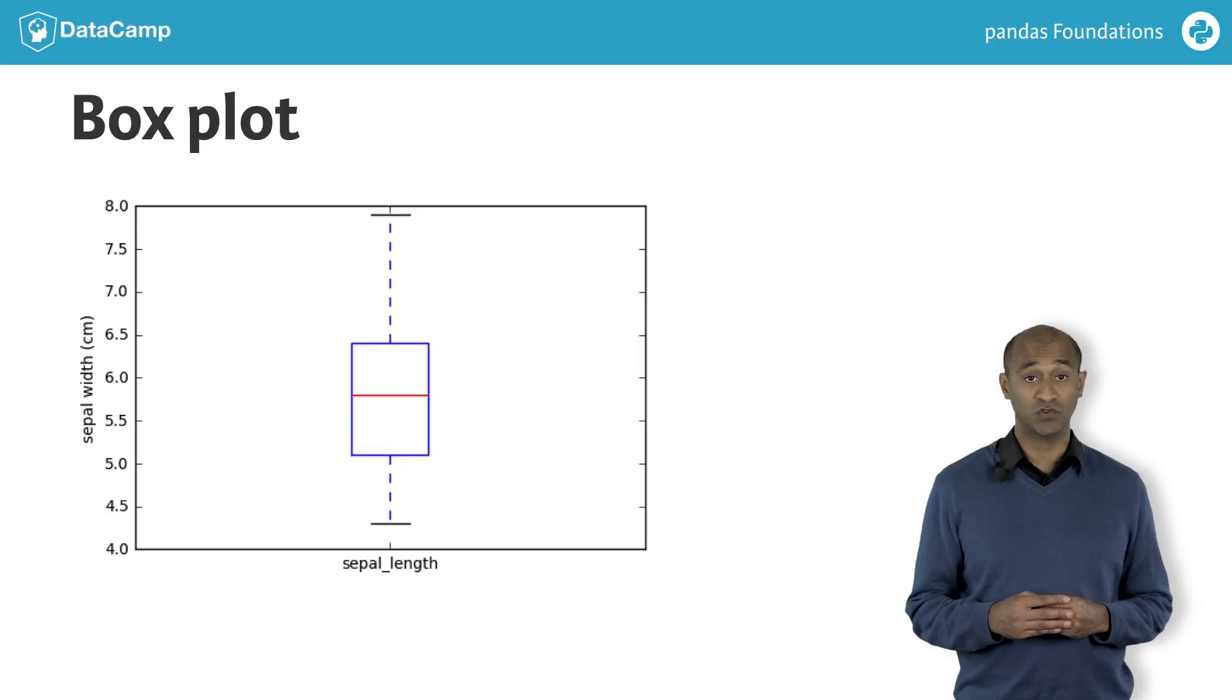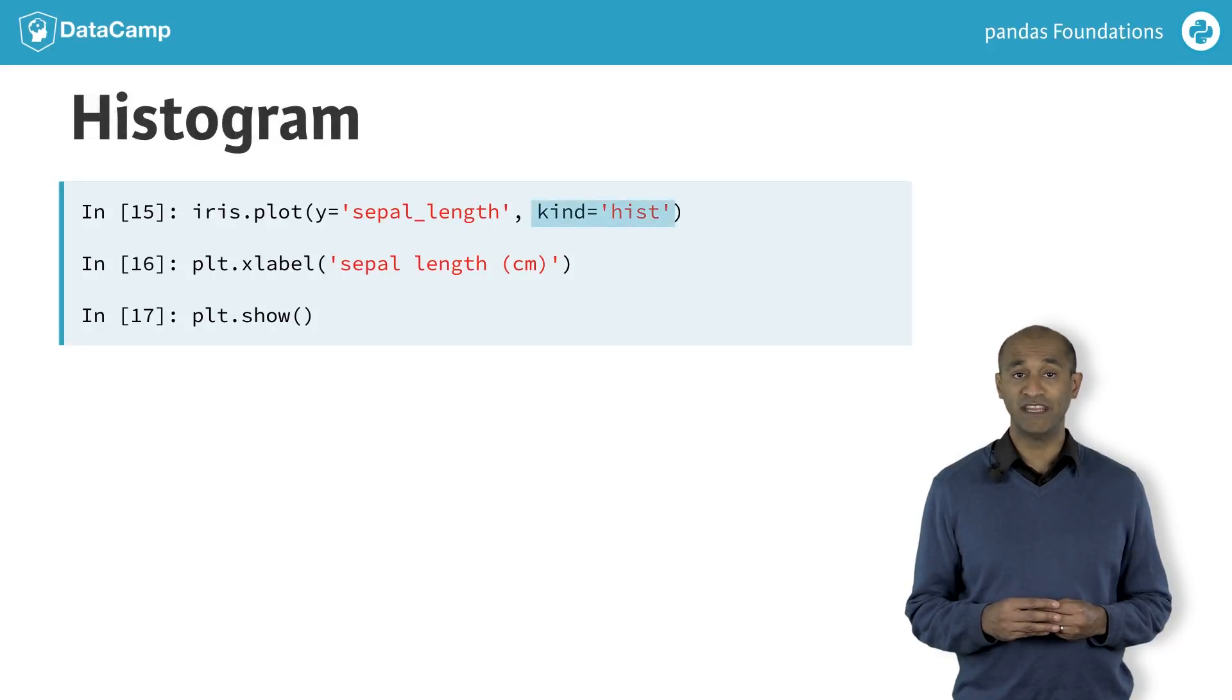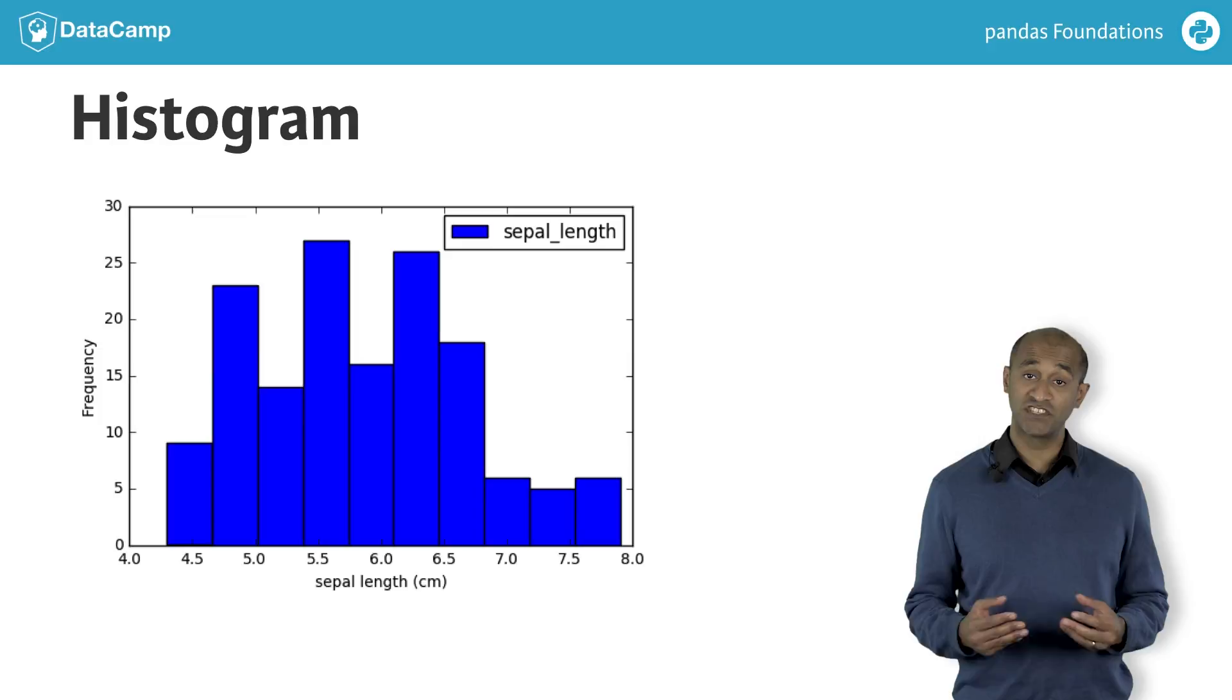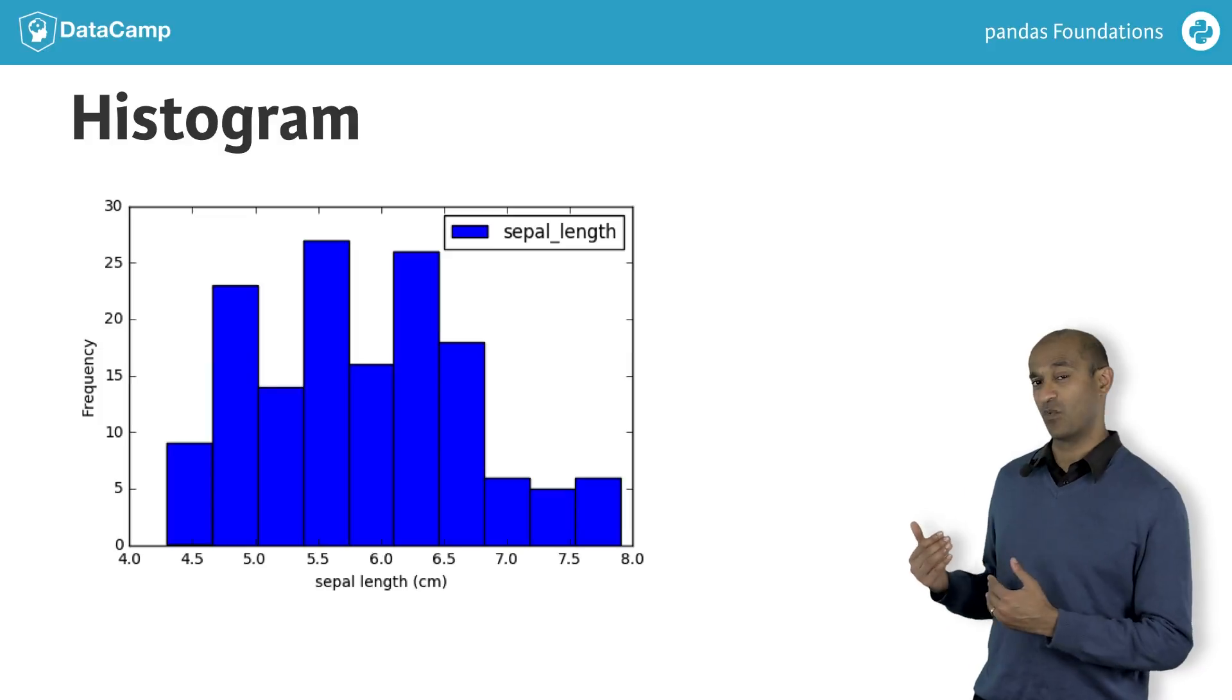Another common plotting tool for EDA is a histogram. Here, we use kind equals hist. Recall that histograms show frequencies of measurements counted within certain bins or intervals. The result approximates a probability distribution function, or PDF, of the sepal length of all the iris flowers. It could be bell-shaped, but it's hard to tell with bins this wide.